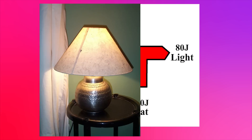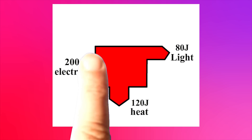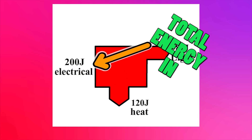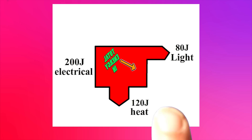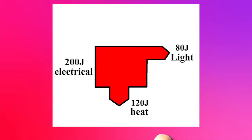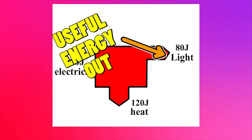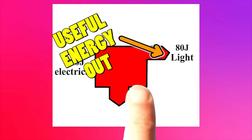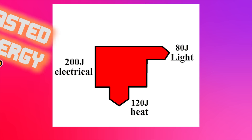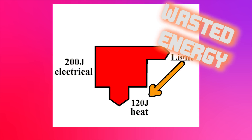Here's the Sankey diagram for a lamp. Here we can see the total amount of energy entering the machine — total energy in. The horizontal arrows in this part of the diagram show the energy that is transferred usefully — useful energy out. This arrow pointing downwards shows us the amount of energy that is wasted — wasted energy.